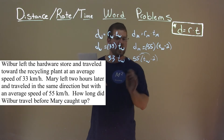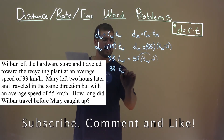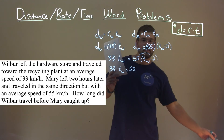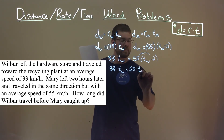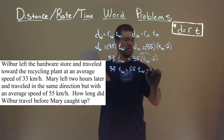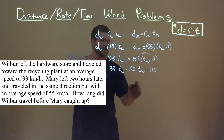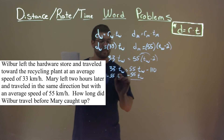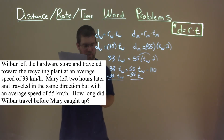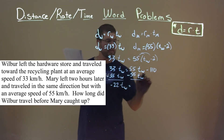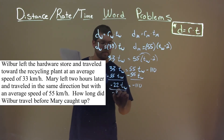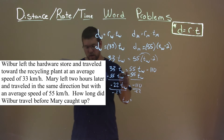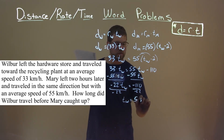So let's distribute this 55. So 33 times T sub W is equal to 55 T sub W minus 110. We want to combine our like terms, subtracting 55 T sub W from both sides. And 33 minus 55 is negative 22 T sub W, which is equal to negative 110. Let's divide by negative 22 on both sides. And we have the time that Wilbur was traveling: negative 110 divided by negative 22 is five, and our unit is hours.